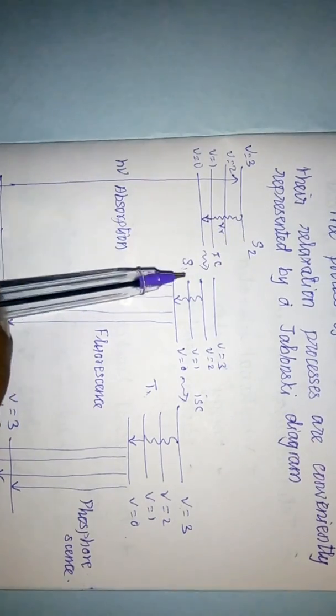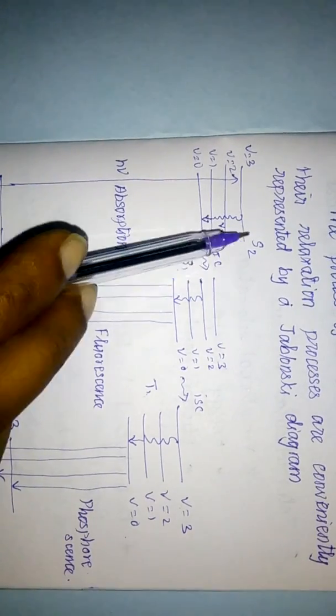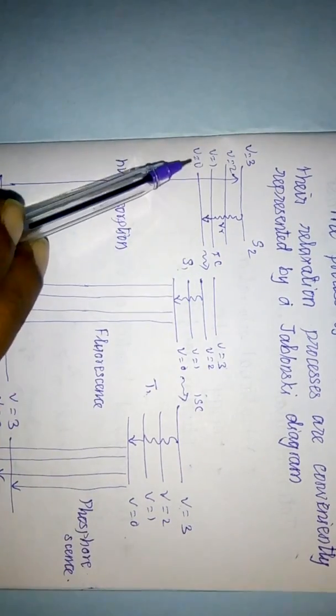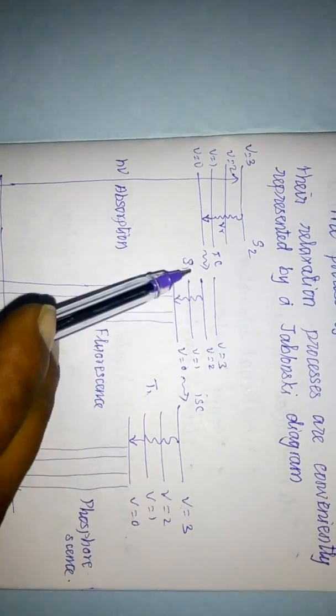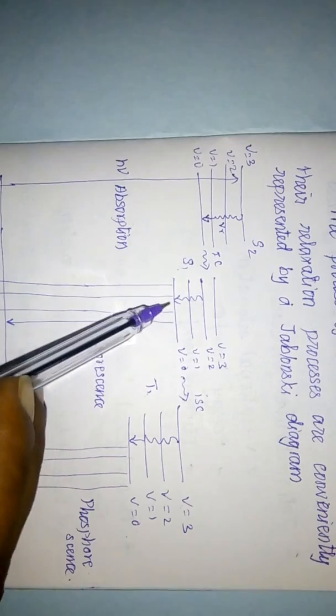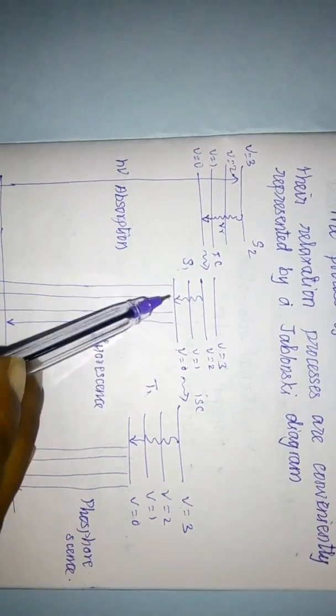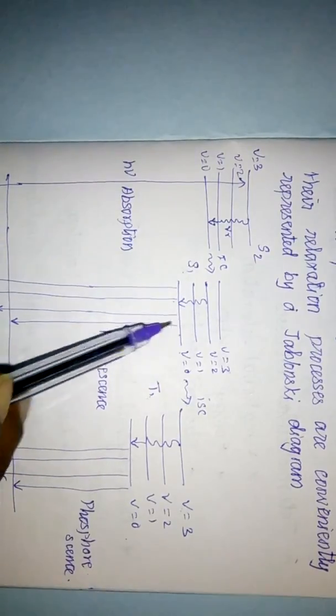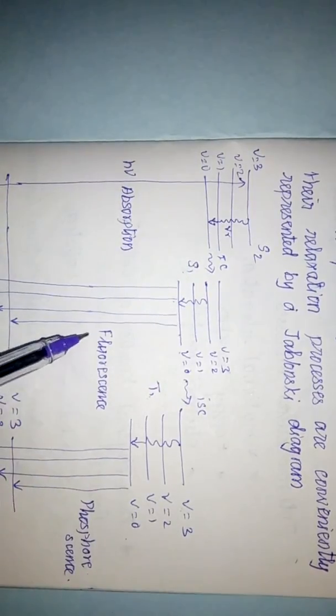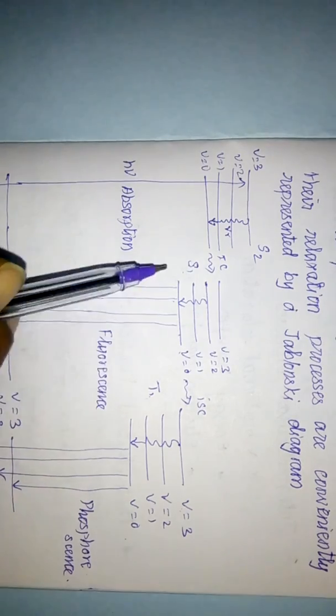During internal conversion it moves from singlet states to singlet states, so it is spin-allowed — both are singlet states. This is the transition from the S2 ground vibrational level to the higher vibrational levels of S1. From there it again relaxes to the ground vibrational level of S1. From here there are two possibilities.